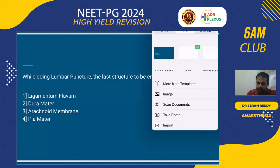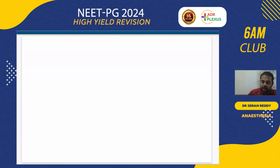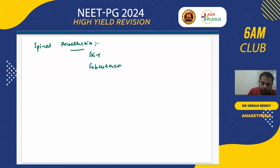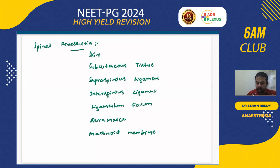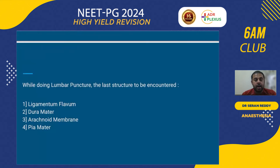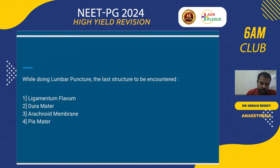Let's see the structures pierced in sequence for spinal anesthesia: skin, subcutaneous tissue, supraspinous ligament, interspinous ligament, ligamentum flavum, dura mater, and arachnoid membrane. So the last structure pierced is the arachnoid membrane. Don't get carried away by seeing the supraspinous ligament — the correct answer is arachnoid membrane.